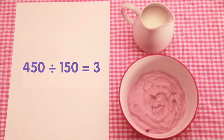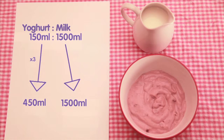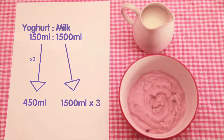We now know that 450 millilitres is 3 times 150 millilitres, so the ingredients need multiplying by 3. So in order to work out how much milk she needs, we need to multiply 1500 millilitres by 3.